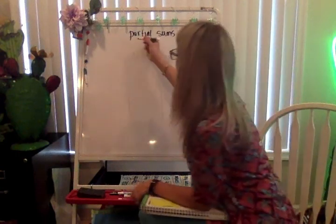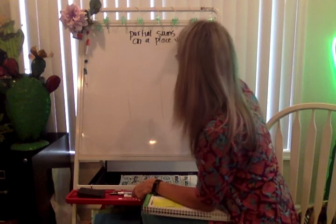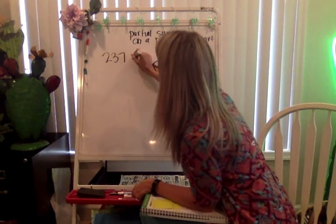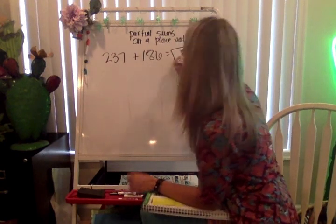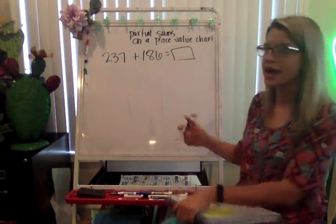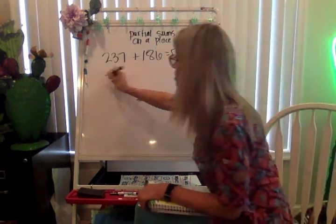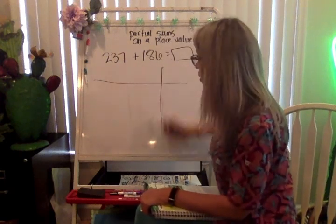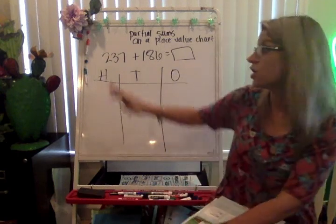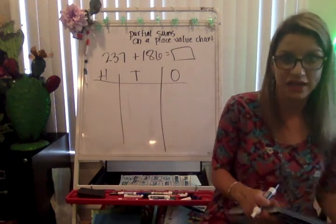All right, so we're doing partial sums, and I'm going to just write on a place value chart. I'm going to pick a new number, 237 plus 186 equals something. I'm going to go ahead and put that on my place value chart. Do not do any regrouping at this time because we have to use it as the partial sums for this equation. So go ahead, pause your video. I'm going to stand up in a second after I have this ready. I'd like for you to put this equation on your place value chart, but don't do any bundling at this time.